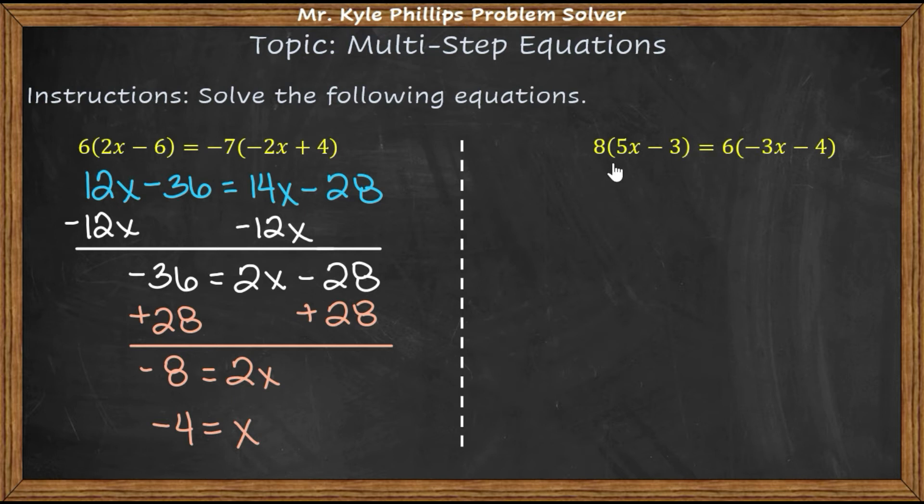And there's a specific reason why I chose this example. So 8 times 5 is going to give us 40x. 8 times negative 3 is negative 24. 6 times negative 3 is negative 18. 6 times negative 4 is negative 24.